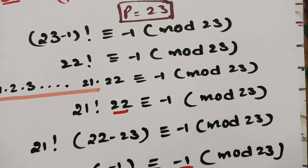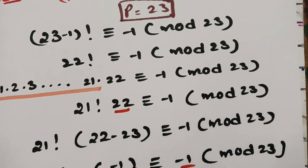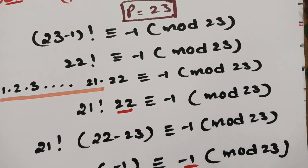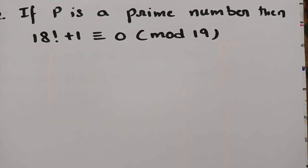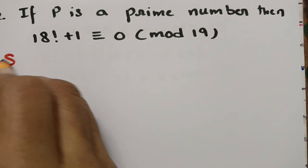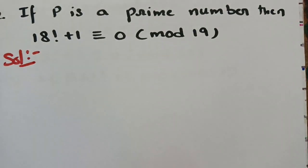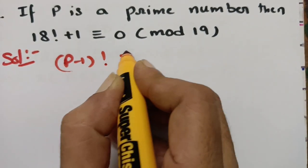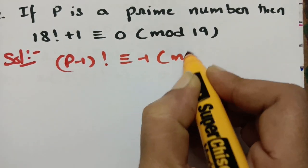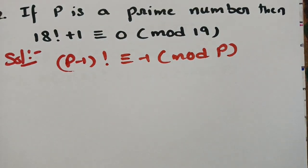The second question is: 18! + 1 ≡ 0 (mod 19). If P is a prime number, then 18! + 1 ≡ 0 (mod 19). According to Wilson's theorem, (P−1)! ≡ −1 (mod P).